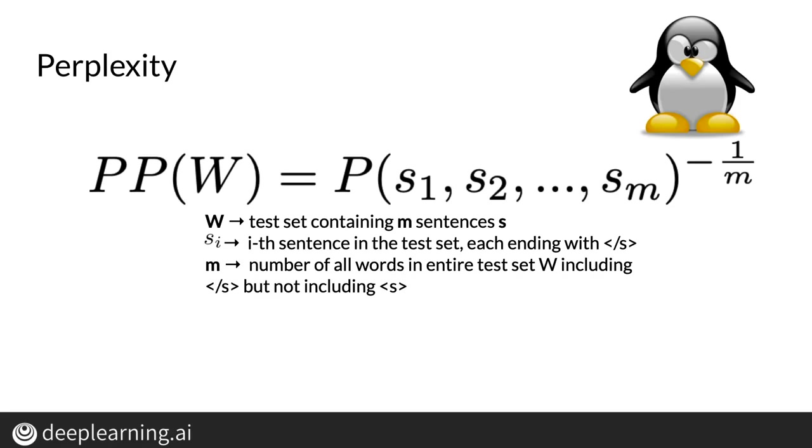You'll start by computing the probability of all sentences in your test set, and then raise the probability to the power of negative 1 over m. Perplexity is basically the inverse probability of the test set, normalized by the number of words in the test set.